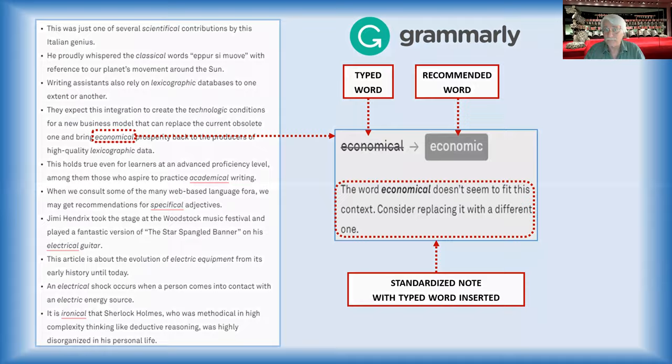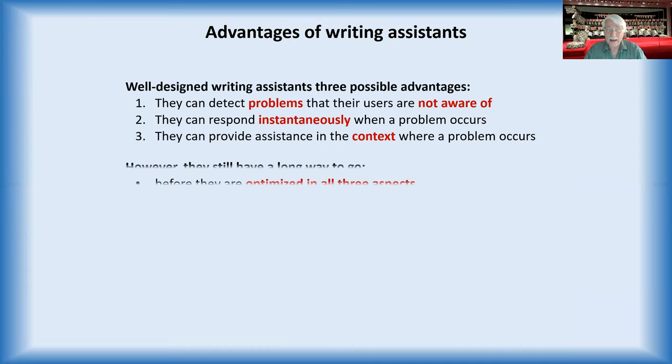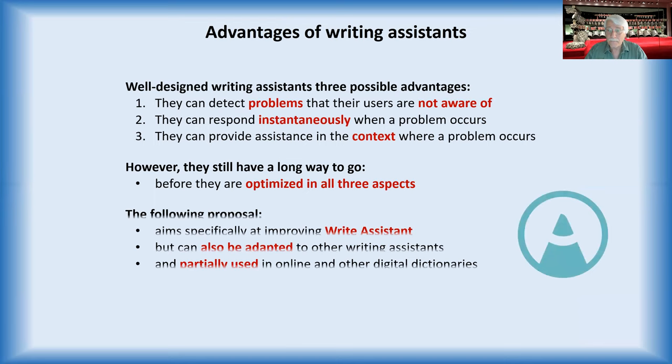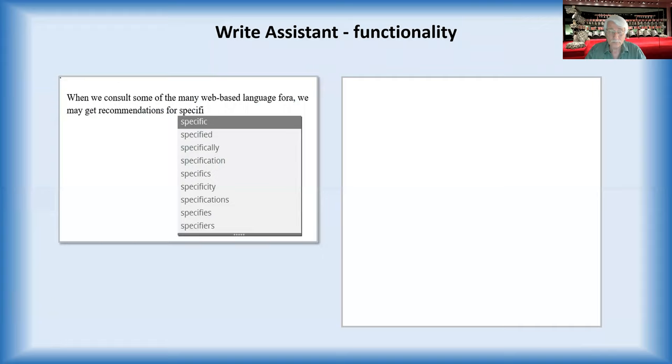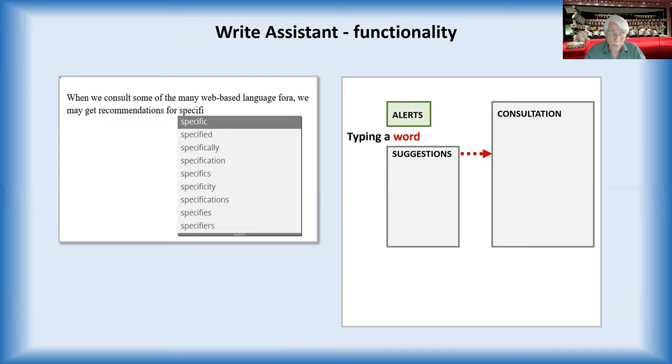Now, writing assistants have a lot of advances. And in this case, in this paper, I'll focus on write assistant. But the proposal will come up with will also be able to be used or could be used in other writing assistants and even in online dictionaries. This is the functionality, the typical one of write assistant. You type a word, you get a suggestion. If you want to consult, you can consult. And then what we hope to have in the nearby future, alerts. If there's any problem with the word, get an alert. And if you have doubts, you can just consult.